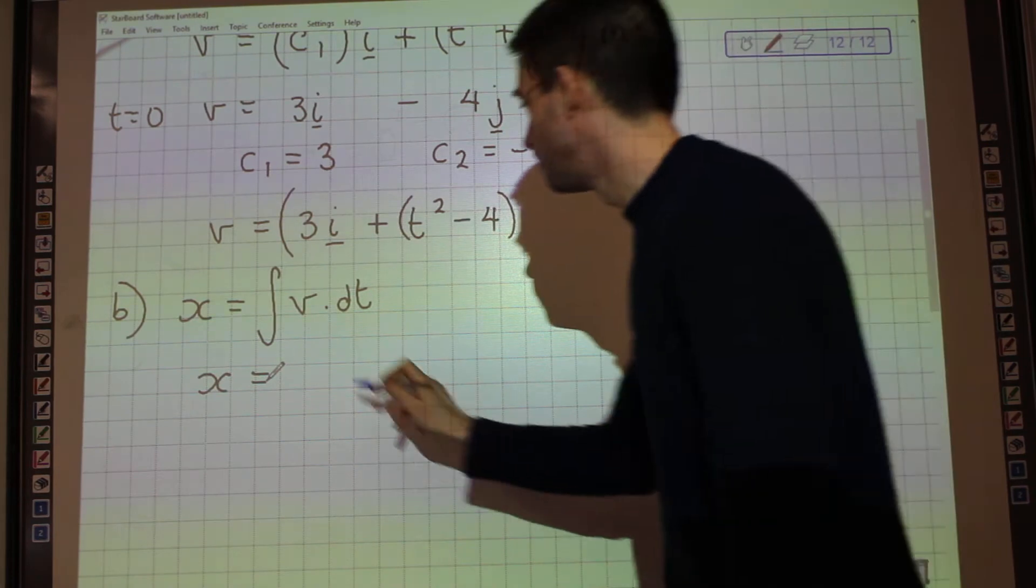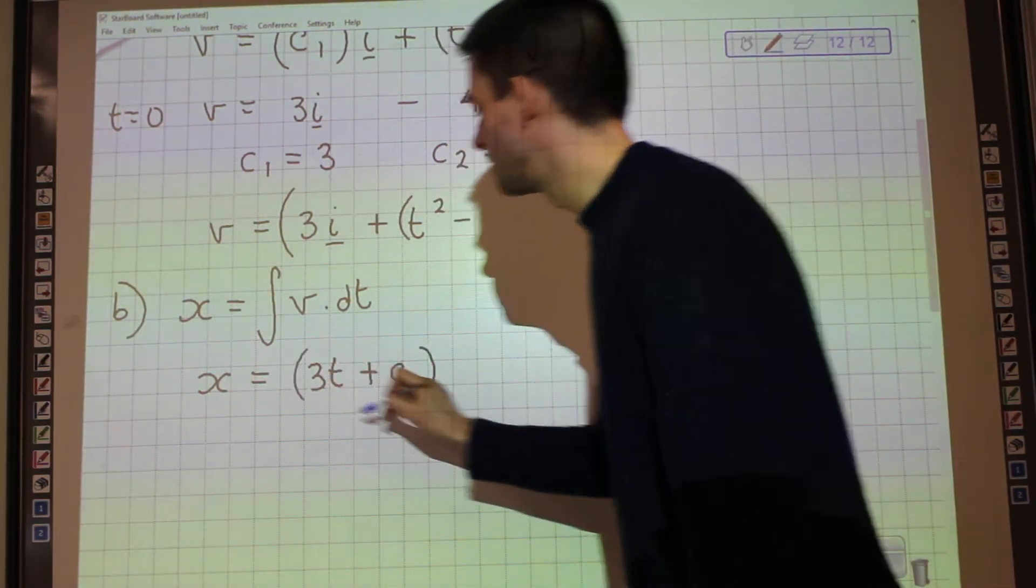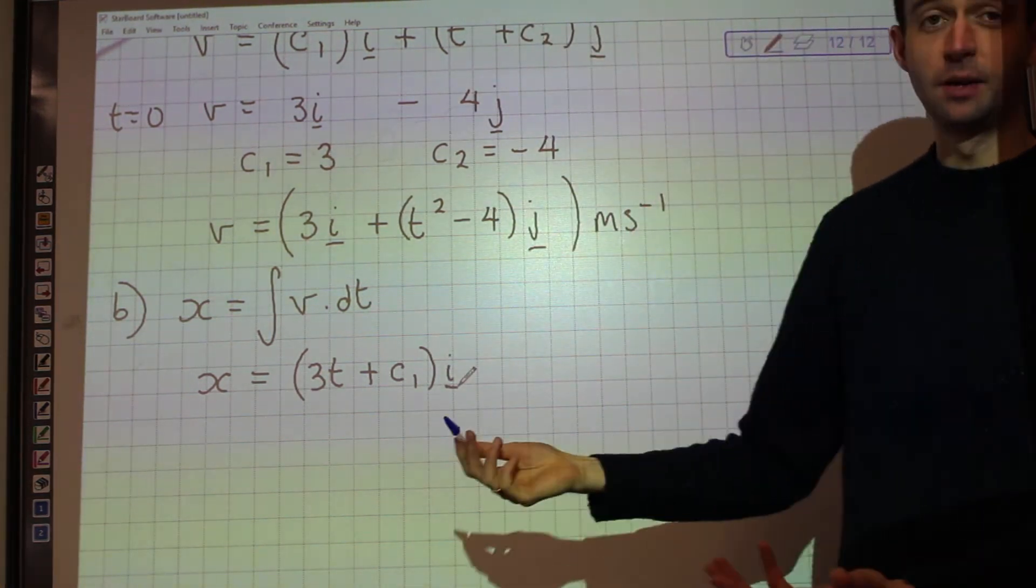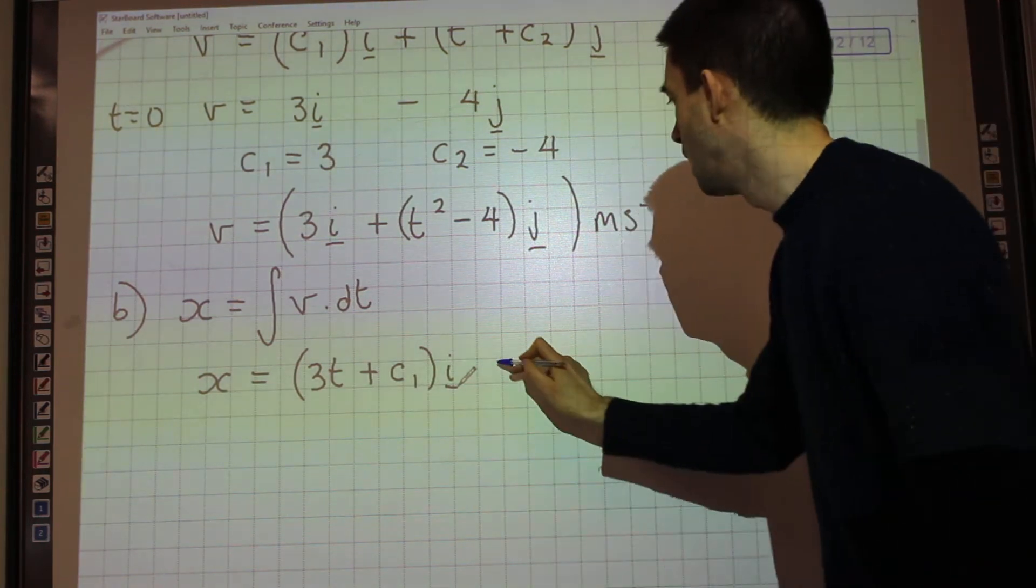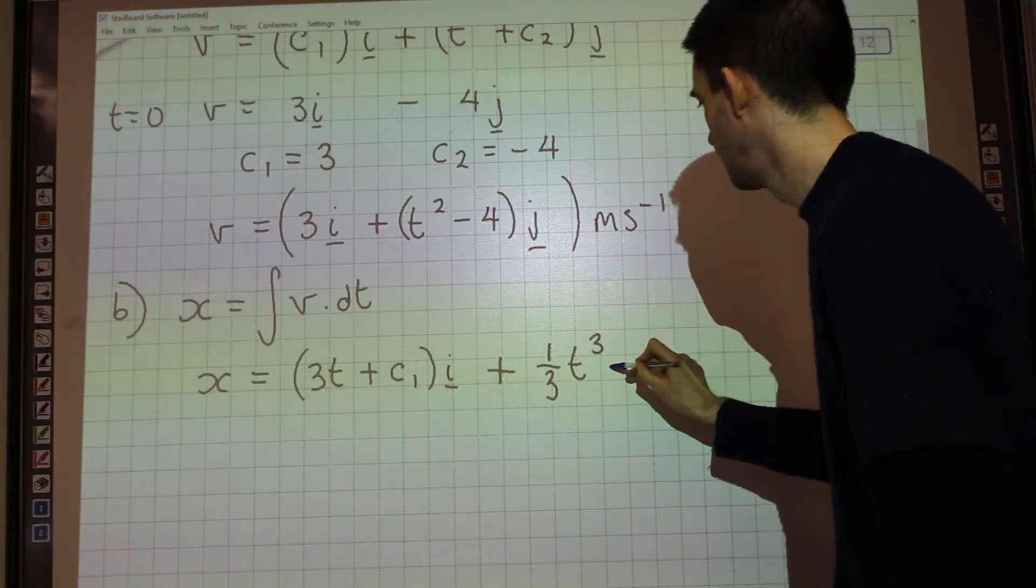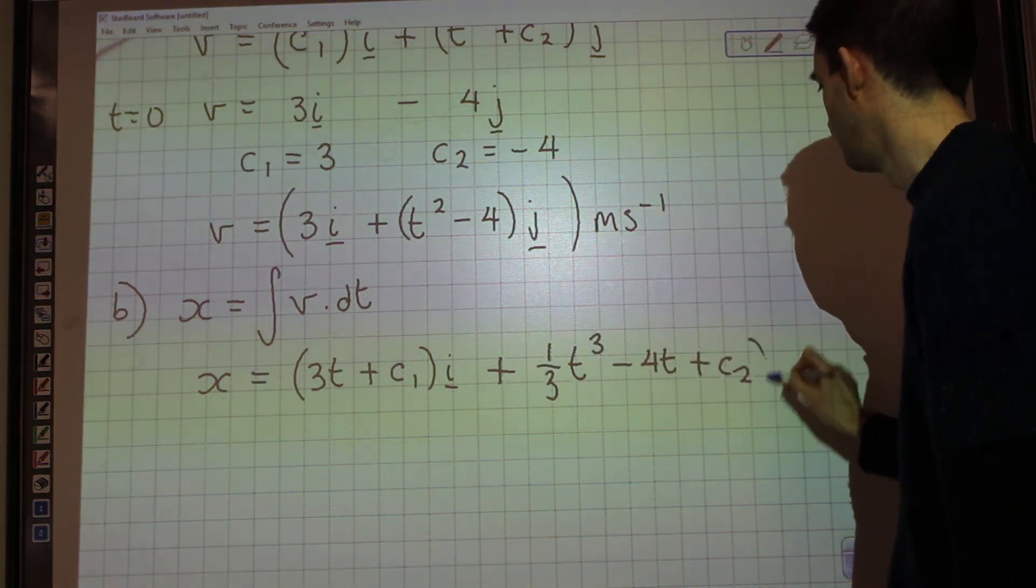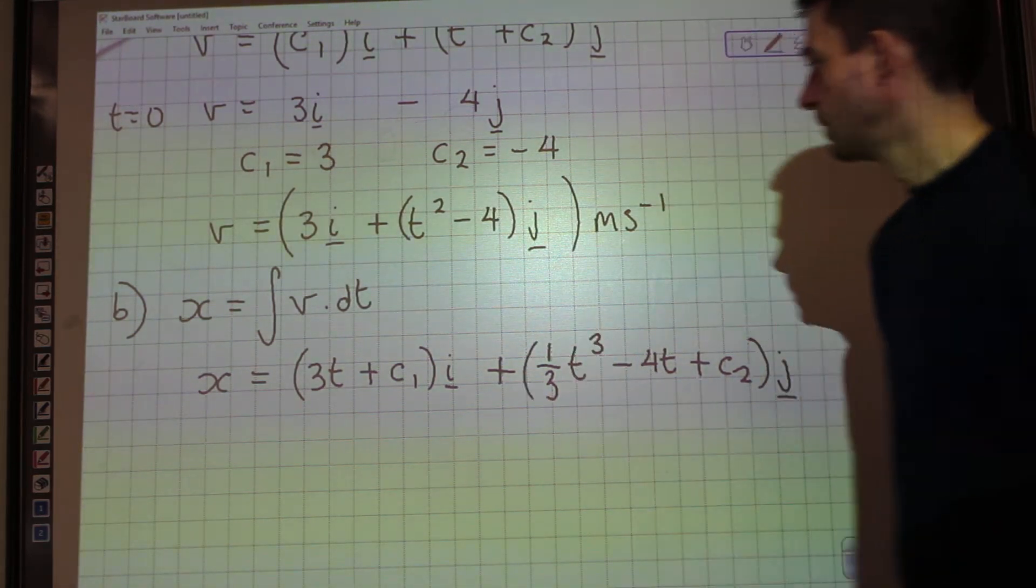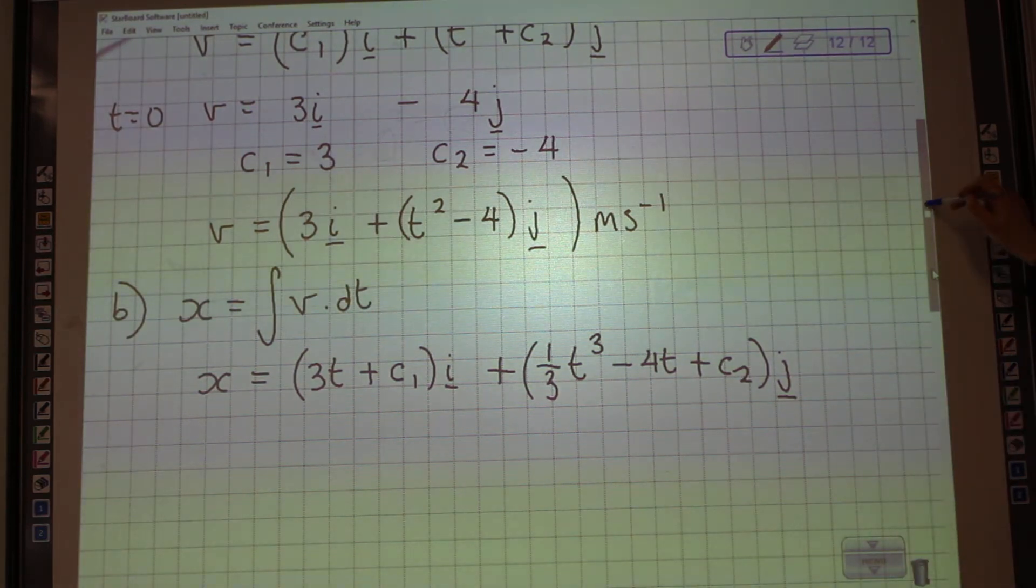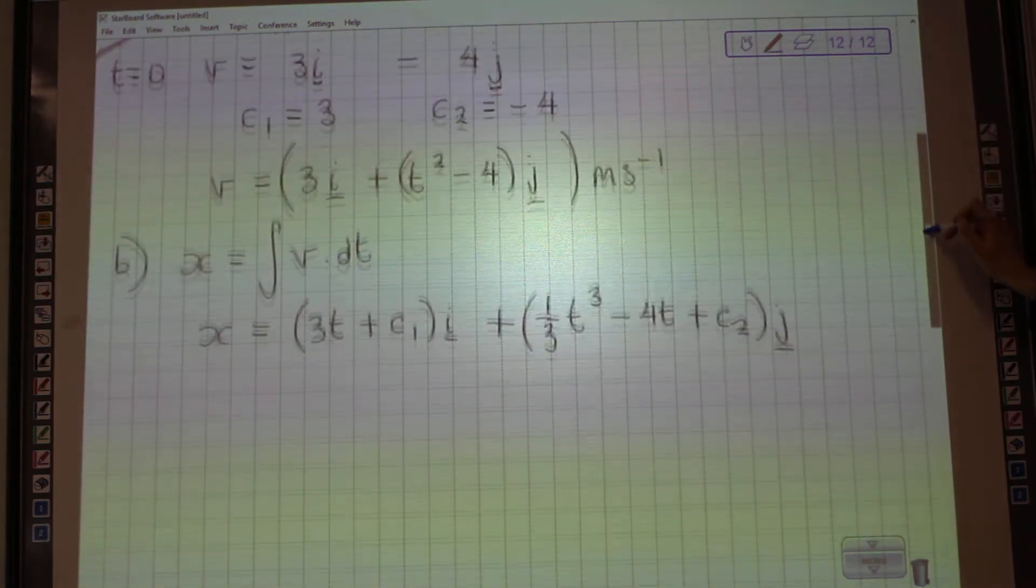If you integrate 3, you get 3t plus c1. It doesn't matter that I'm calling it c1 again. It's a different question, a different constant. I'm going to find it as a number in a moment anyway. I get plus 1 third t cubed minus 4t plus c2j. And that is my expression for position. I was given in the question that the initial position when t is 0 was i plus 4j.